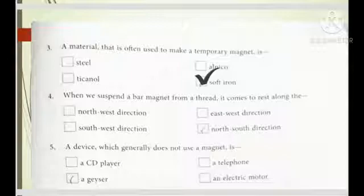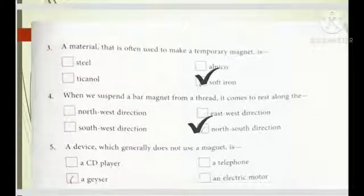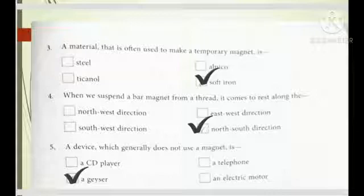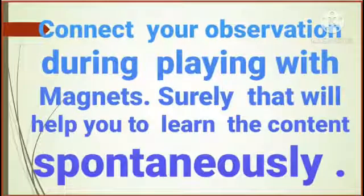Now the fourth one, when we suspend a bar magnet from a thread it comes to rest along the north-south direction. And the last one, a device which generally does not use a magnet is, CD player has magnet, telephone has it, electric motor has it, only geezer is the correct answer there. Geezer is the device which is used to warm up the water, so geezer is the correct answer. This is all about the back exercises of chapter 13 dear students.